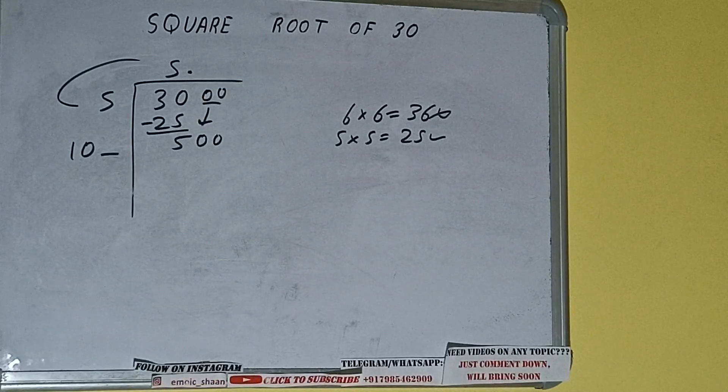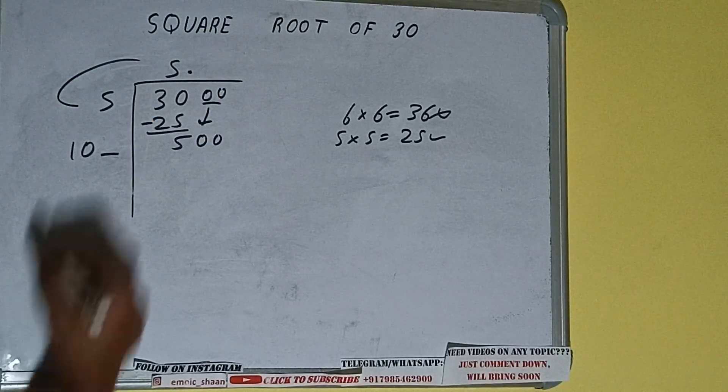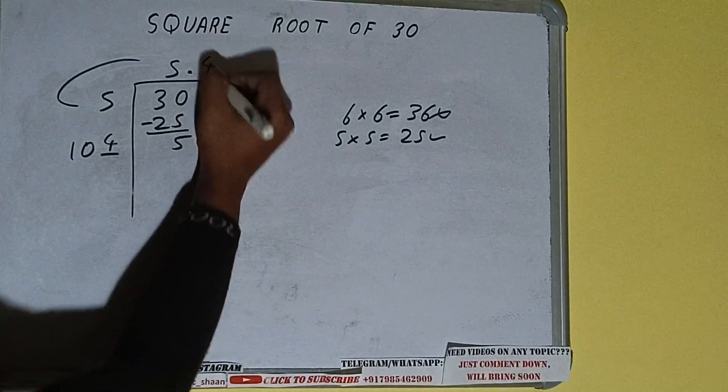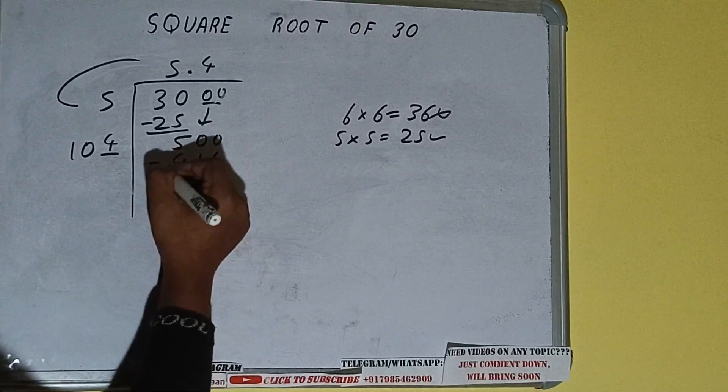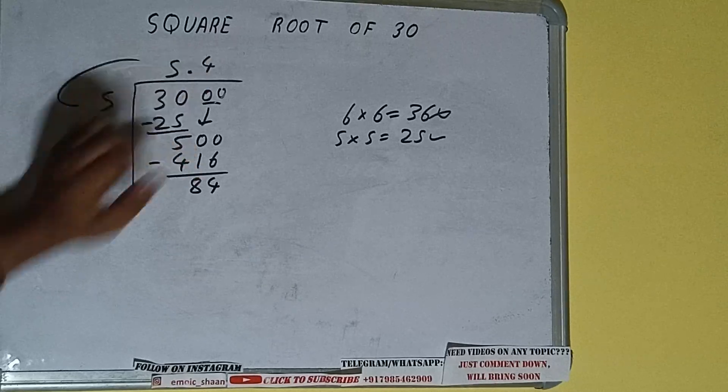will become 500. Now whatever number we write here, we have to write here also. So we can write 4 here and 4 here. It will be 416, subtract, 84 will be left. Now 104 into 4 we did,